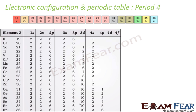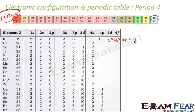Let us see period 4. Period 4 has more elements — from element 19 to 36, so it has 18 elements. For example, potassium has atomic number 19, and its configuration is 1s2, 2s2, 2p6, 3s1, 3p6, 4s1. The maximum value of n is 4. So period 4 has 18 elements.